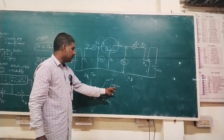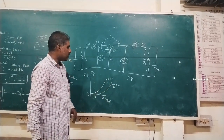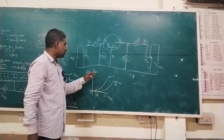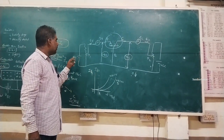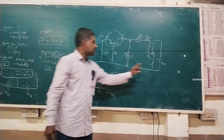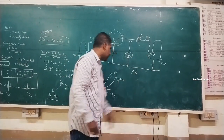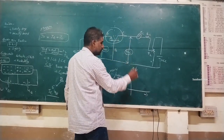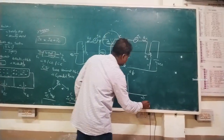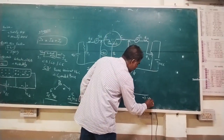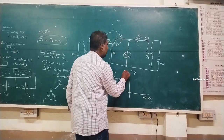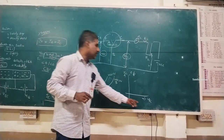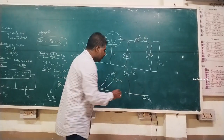By varying VCB in steps, we obtain the input characteristics. VEE is the emitter power supply and VCC is the collector power supply. For output characteristics, VCB is plotted along one axis and collector current IC along the other axis.